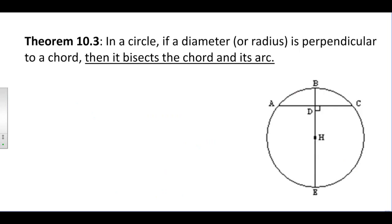Theorem 10-3 says in a circle if a diameter or a radius is perpendicular to a chord, then it's going to bisect that chord and its arc.